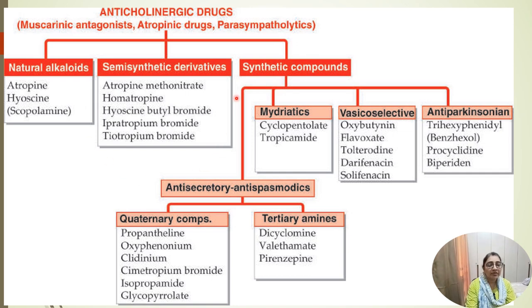The natural alkaloids are atropine and hyoscine — scopolamine is another name for hyoscine. Semi-synthetic derivatives include atropine methonitrate, homatropine, hyoscine butylbromide, ipratropium bromide, and diatropium bromide.